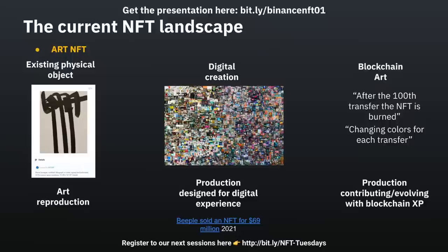If we take, for example, the art NFT market, we're going to separate it in three. There is the existing physical object that already exists — here you see a representation of a Pierre Soulage. What has been done with this NFT is to take the media of this painting, reproduce it as an NFT, and then sell it — but it's a little bit the equivalent of a poster or picture you reproduce.